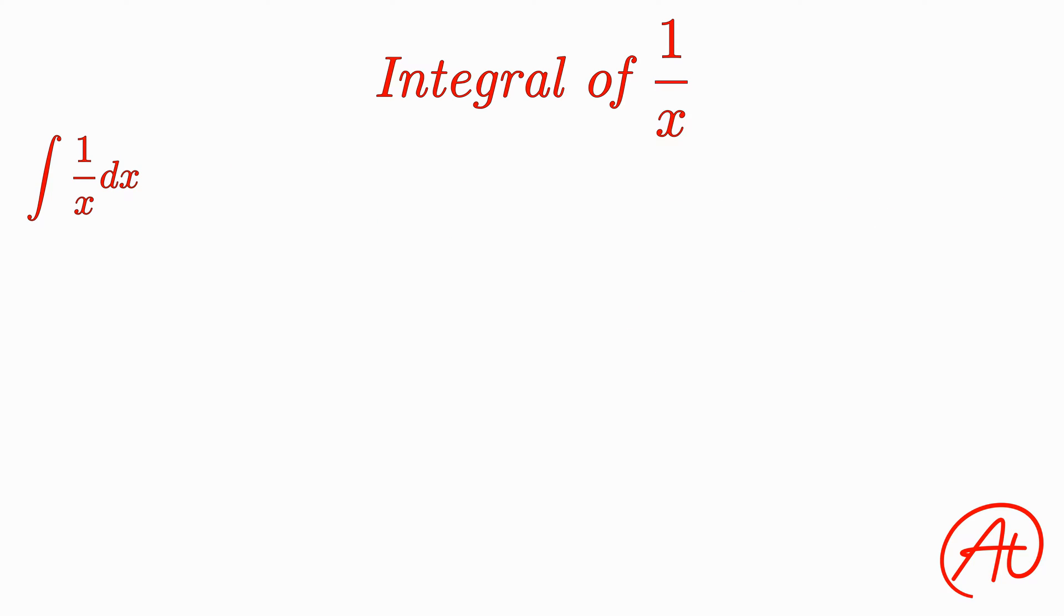Well, if we can't use the power rule, how do we know what the integral of 1 over x is? Well, if you think back to our derivative definitions, you might recall that the derivative of ln of x is equal to 1 over x. And since integrals and derivatives are opposites of each other, you might think that the integral must be ln of x plus c.